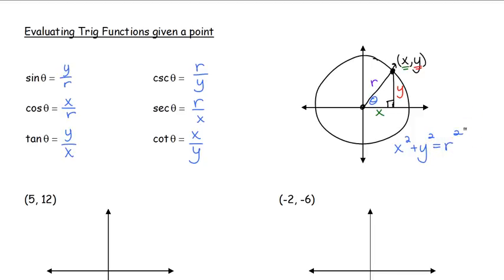So in a given point, the x coordinate squared plus the y coordinate squared is going to give you the radius squared of the circle.